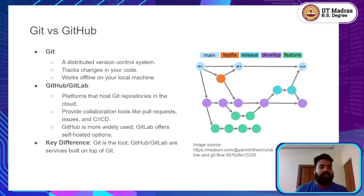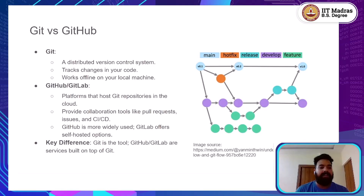GitHub, on the other hand, is a platform that hosts your Git repositories in the cloud. GitHub and also GitLab add collaboration features on top of Git, such as pull requests, issue tracking, continuous integration, and deployment tools. Think of it this way: Git is a tool you use on your machine, and GitHub or GitLab are the places where you share your work with others and collaborate as a team.